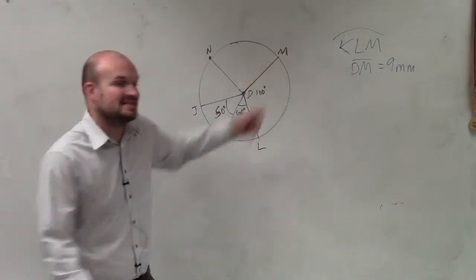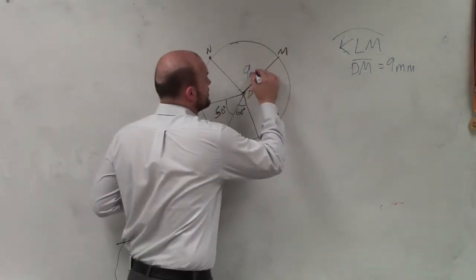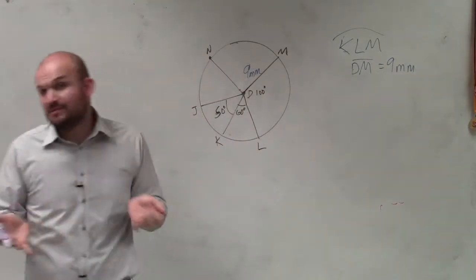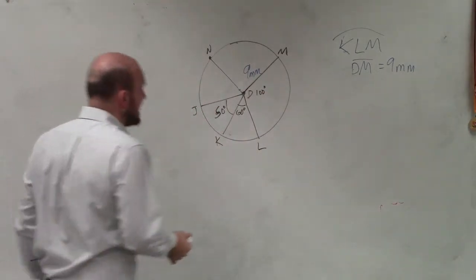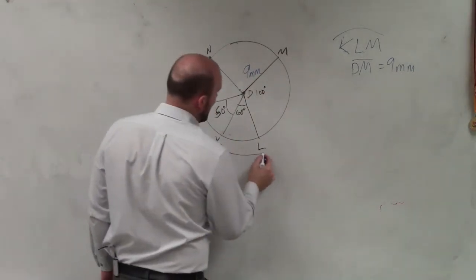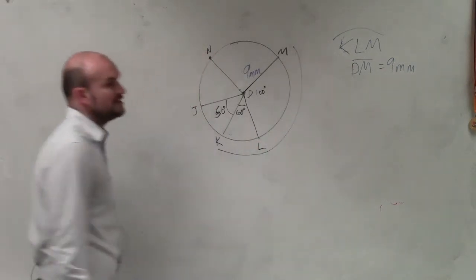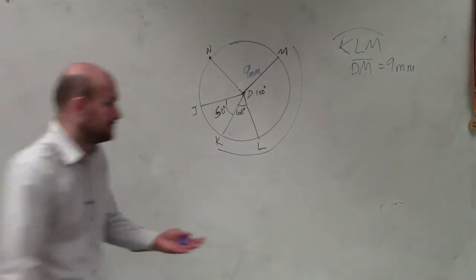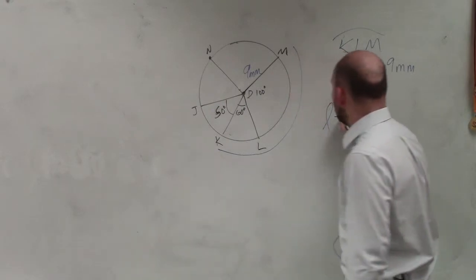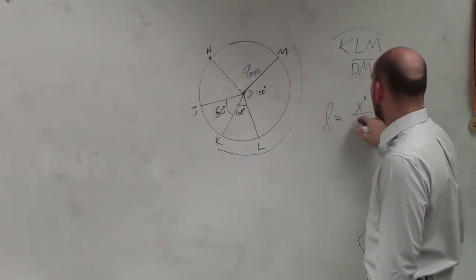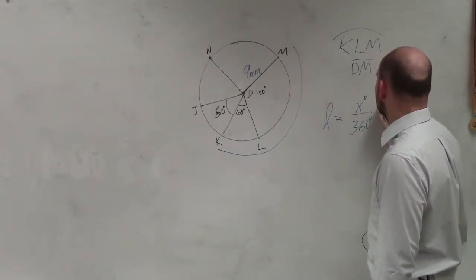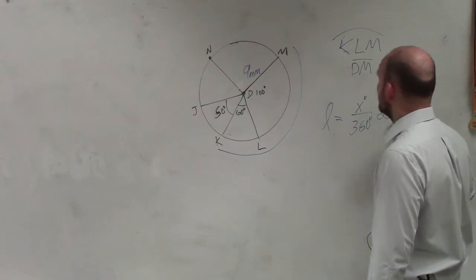What we notice is that's the center, that's the end, and that is going to be the radius. D to M is the radius. And then we're trying to find the actual length from K to L to M. Now, if you guys remember the formula for length, length equals x over 360 degrees times 2 pi r.